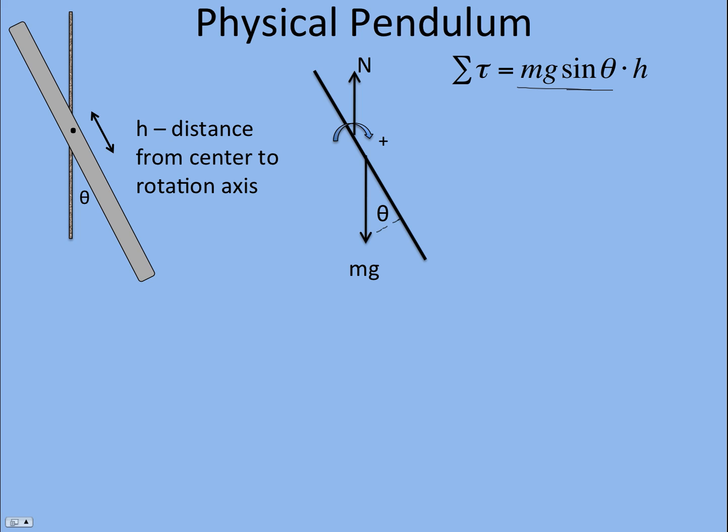Because you only want the perpendicular component times the lever arm, and we define the lever arm as the distance from the center to the rotation axis. That would be lever arm L normally, but we're using the term h because it also has relevance with the parallel axis theorem. So we can see this is a disturbing torque. It is not linear with displacement theta, with the angle that I bring it back.